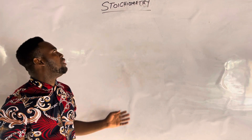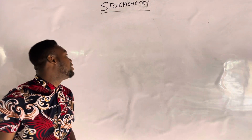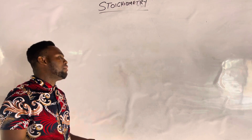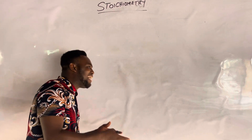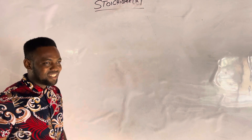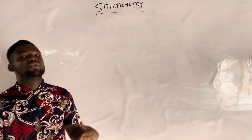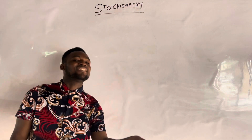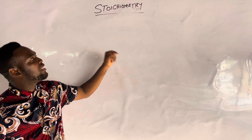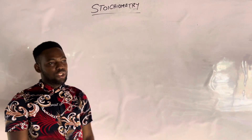But actually, we don't study only the relationship between mass and volume. We can consider mass and mole, mole and mass, volume and mass — like different concepts. So when we study the relationship between reactants and products in a balanced chemical equation, we say we are studying Stoichiometry.